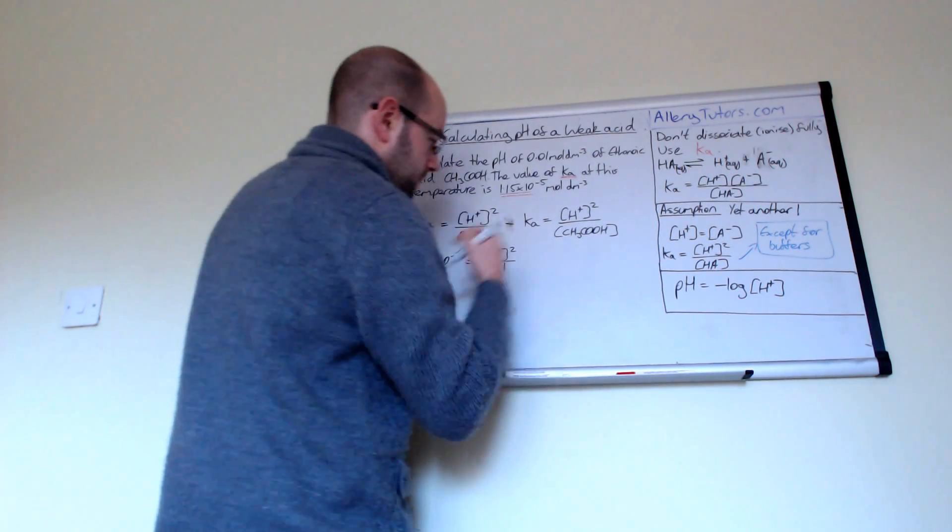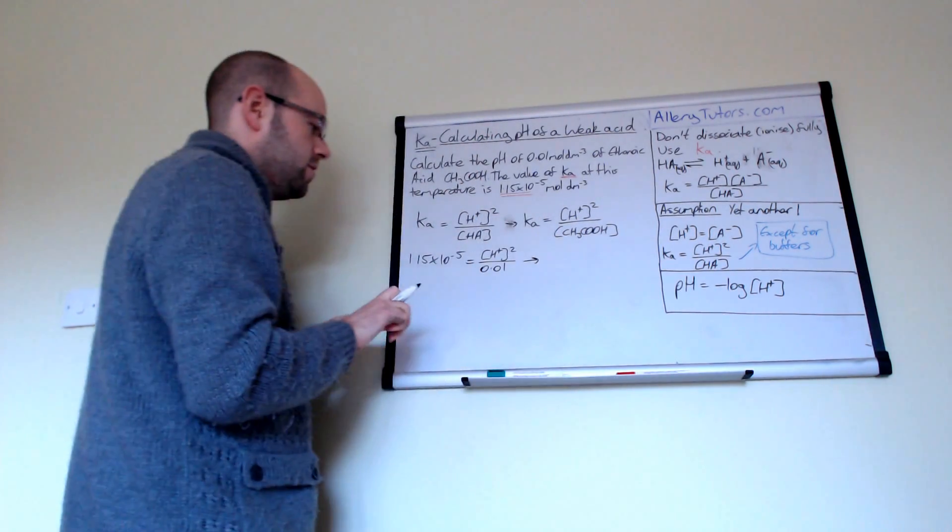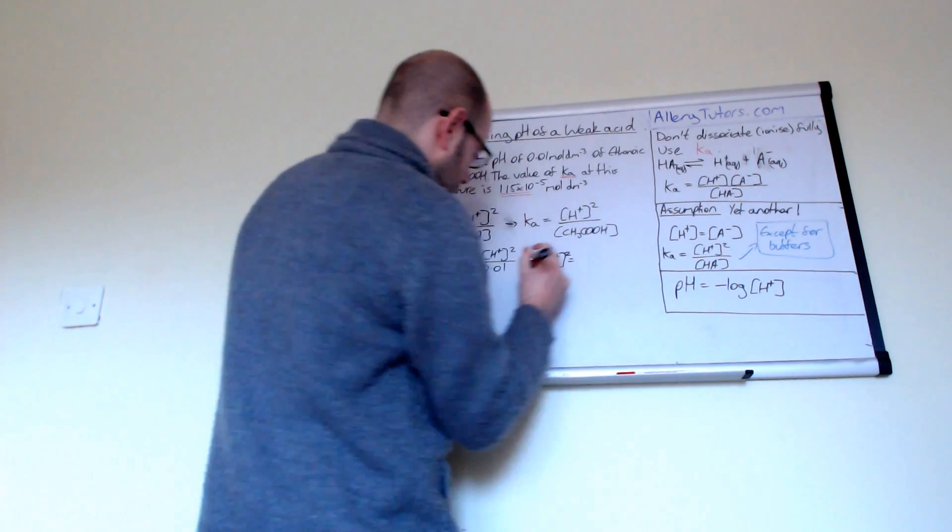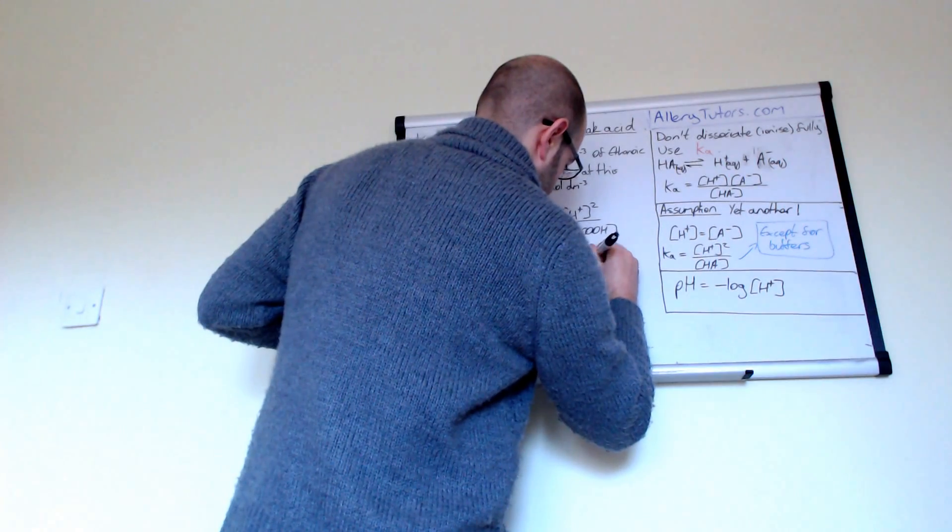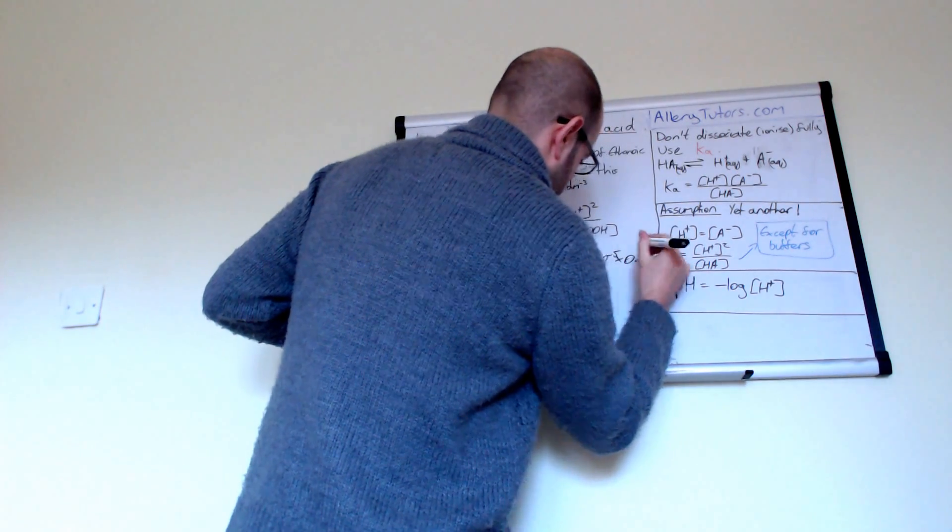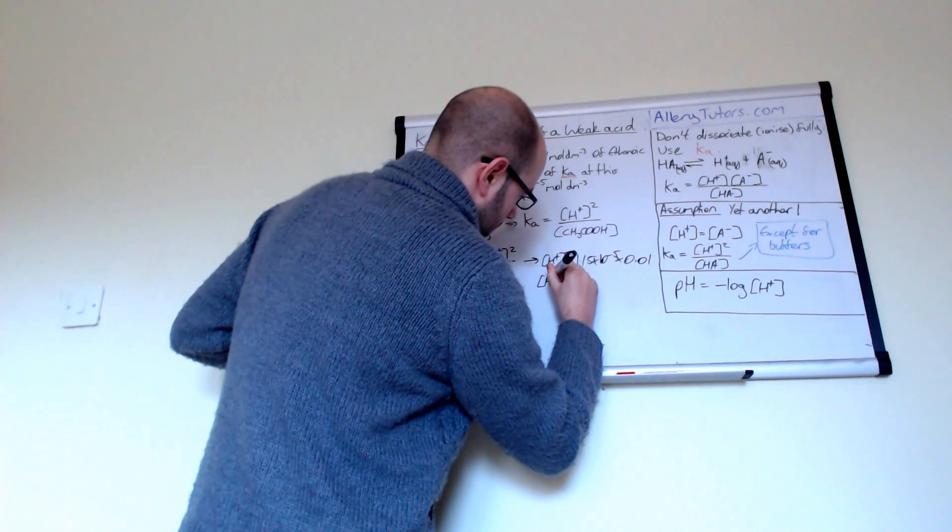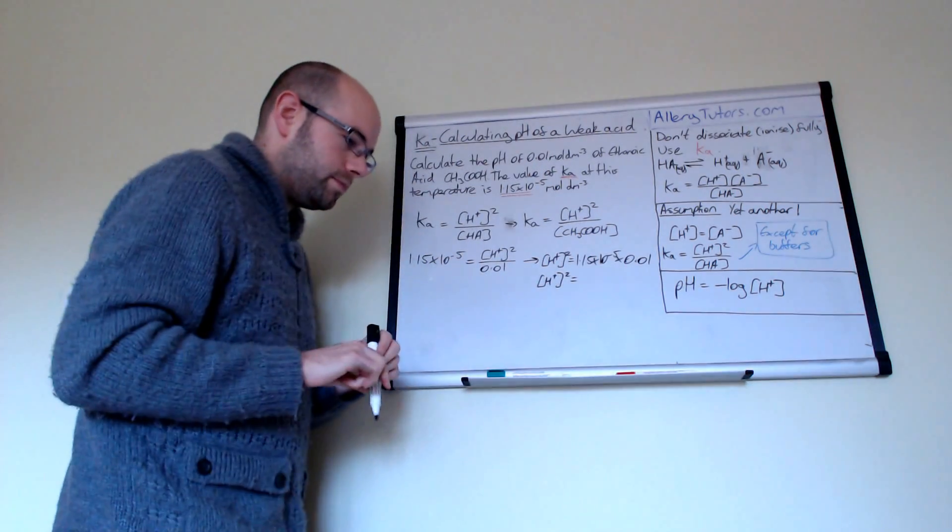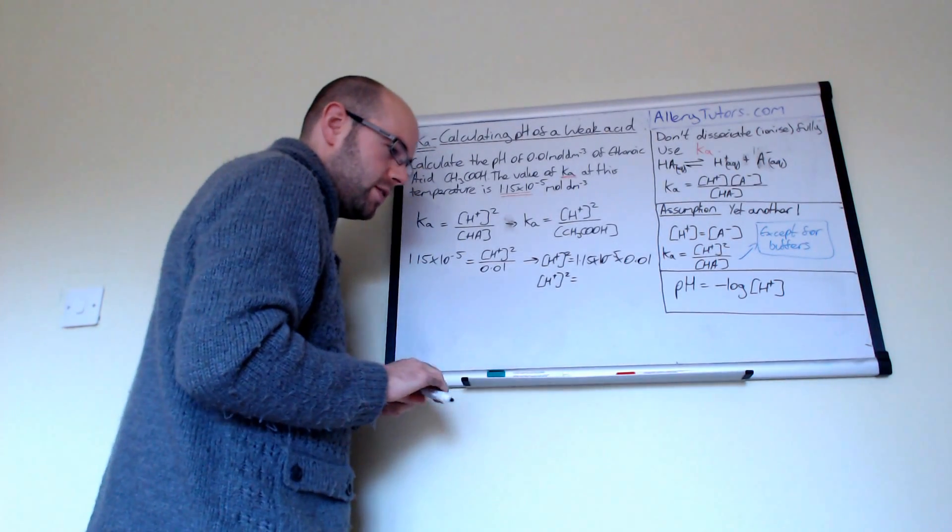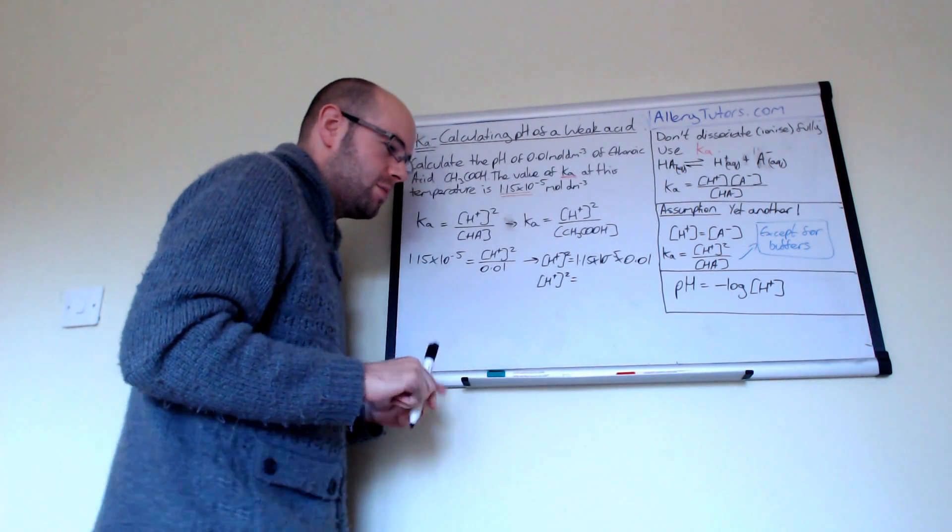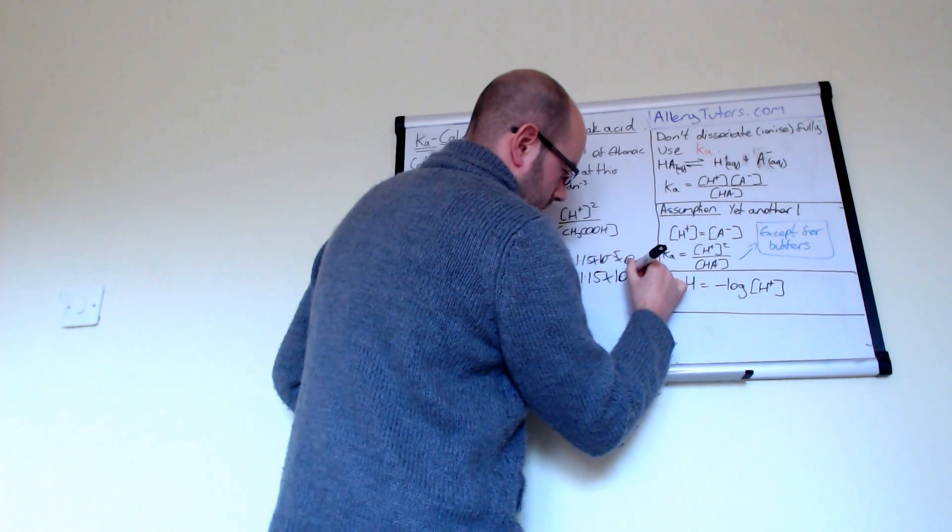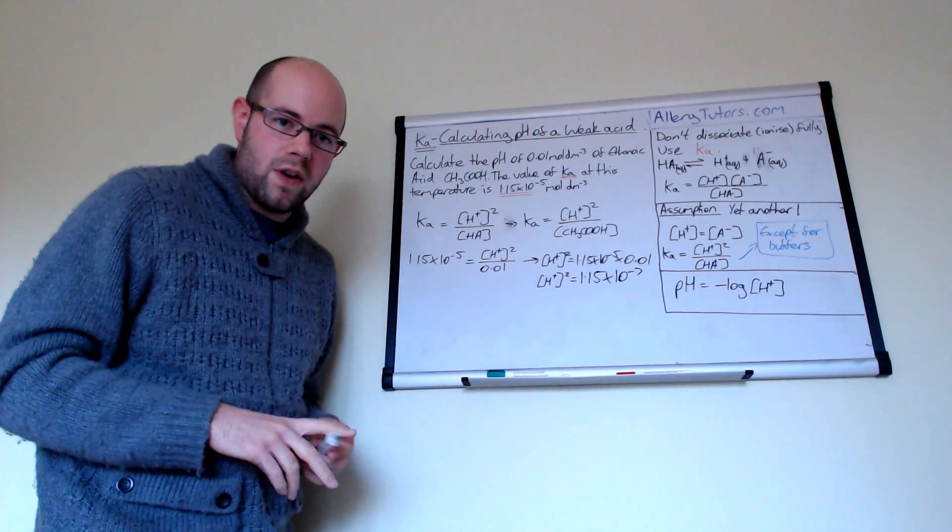And if we rearrange that, we can rearrange that to produce this. So we can do H plus squared equals 1.15 times 10 to the minus 5, multiplied by 0.01. And we should get a value, a H plus squared value, of 1.15 times 10 to the minus 7. And that's our concentration of H plus squared.